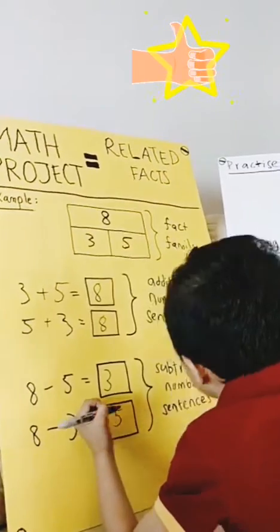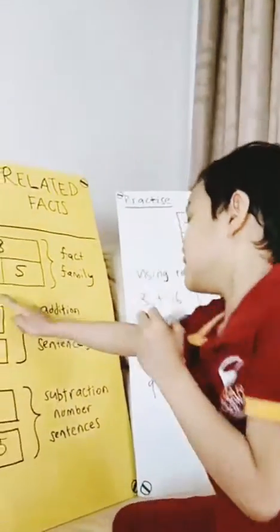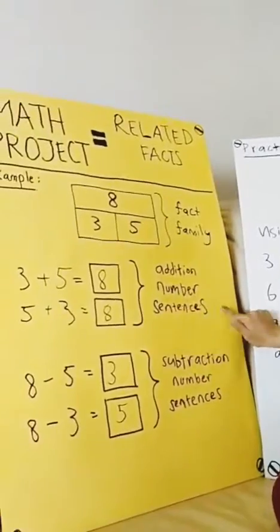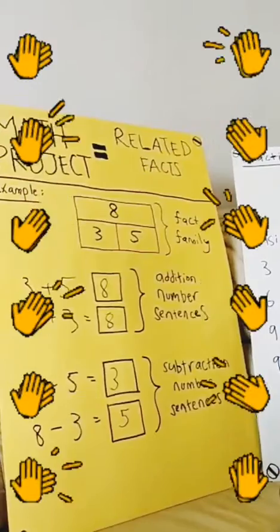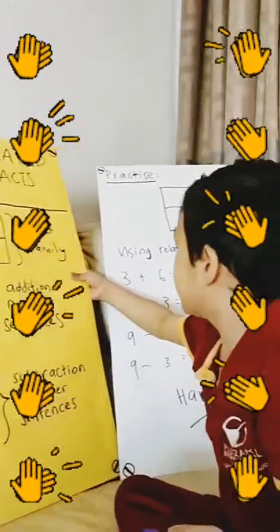I'm going to give you more hard questions. This is addition number sentences, and this is subtraction number sentences. Now let's go up to the next one.